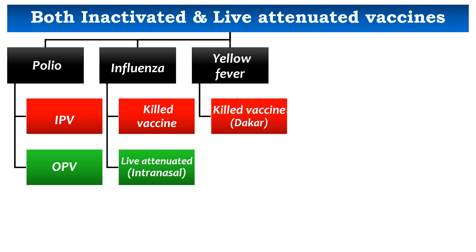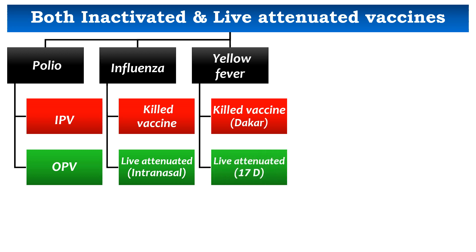For yellow fever, there is a killed vaccine called the Dakar vaccine — it is mouse brain-derived and found to be encephalitogenic, hence no longer in use. There is also a live attenuated vaccine called the 17D vaccine, prepared from the allantoic cavity of chick embryos and therefore contraindicated in people with egg allergy. In India, yellow fever vaccine is prepared at the Central Research Institute, Kasauli.